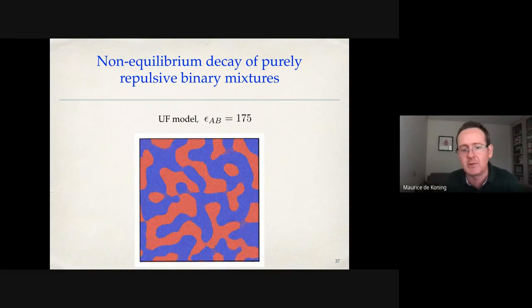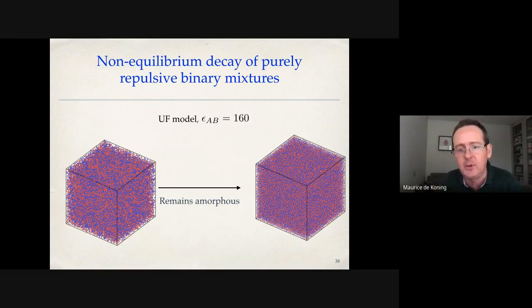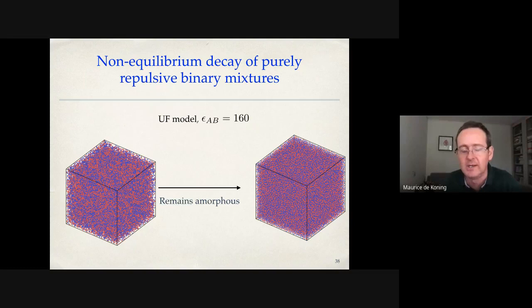Going to a lower value, epsilon_AB = 160, essentially nothing dramatic happens: the system relaxes locally, but the final structure remains amorphous — homogeneous with no obvious structural order.